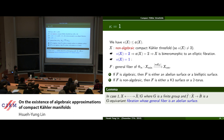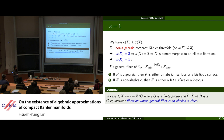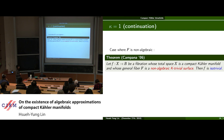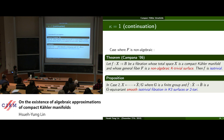In the first case, since a bielliptic surface is a Z/2 quotient of an abelian surface, we can show that if X is in this case, then X is bimeromorphic to a finite quotient of the total space of a G-equivariant fibration whose general fiber is an abelian surface. In the case where the general fiber of the canonical fibration is non-algebraic, we have Campana's theorem: if a fibration has a compact Kähler total space and general fiber F is a non-algebraic K-trivial surface, then F is isotrivial. With a bit more work, X is bimeromorphic to a finite quotient of the total space of a G-equivariant smooth isotrivial fibration in K3 surfaces or two-tori.